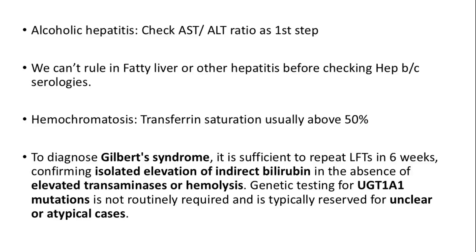For alcoholic hepatitis, check the AST-to-ALT ratio as the first step. In clinical questions, fatty liver or other hepatitis cannot be ruled in before checking hepatitis B and C serologies. In cases of hemochromatosis, transferrin saturation is usually above 50%. To diagnose Gilbert's syndrome, it is sufficient to repeat LFTs in 6 weeks, confirming isolated elevation of indirect bilirubin in the absence of elevated transaminases or hemolysis.